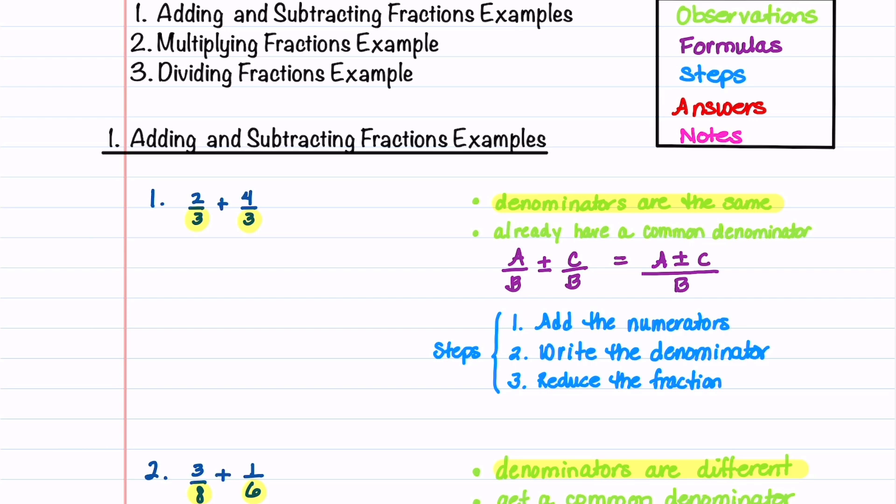Let's do the first example. Since we already have a common denominator, all we need to do is add the numerators, write the denominator, and then reduce the fraction. The formula that shows how to do this is written here in purple. Let's add the numerators. This is equal to 2 plus 4.